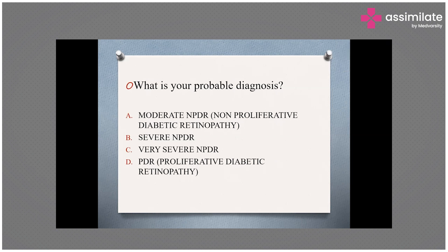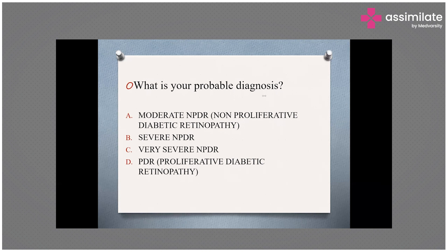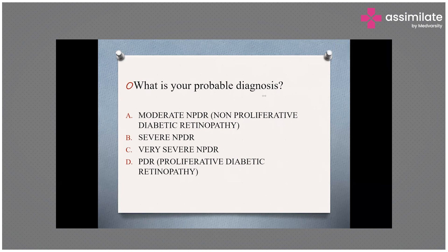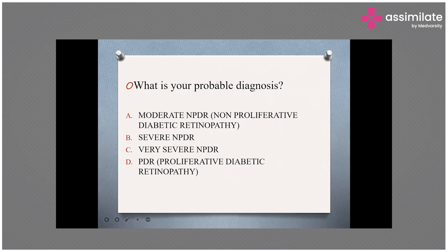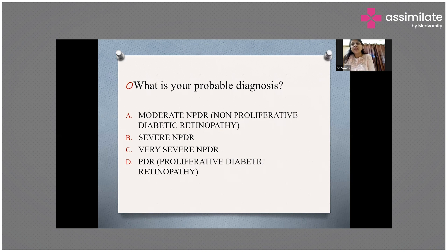Before proceeding with the explanation, the correct answer is option C — very severe non-proliferative diabetic retinopathy. In fact, all four options were selected by attendees, which reflects the complexity of the classification.